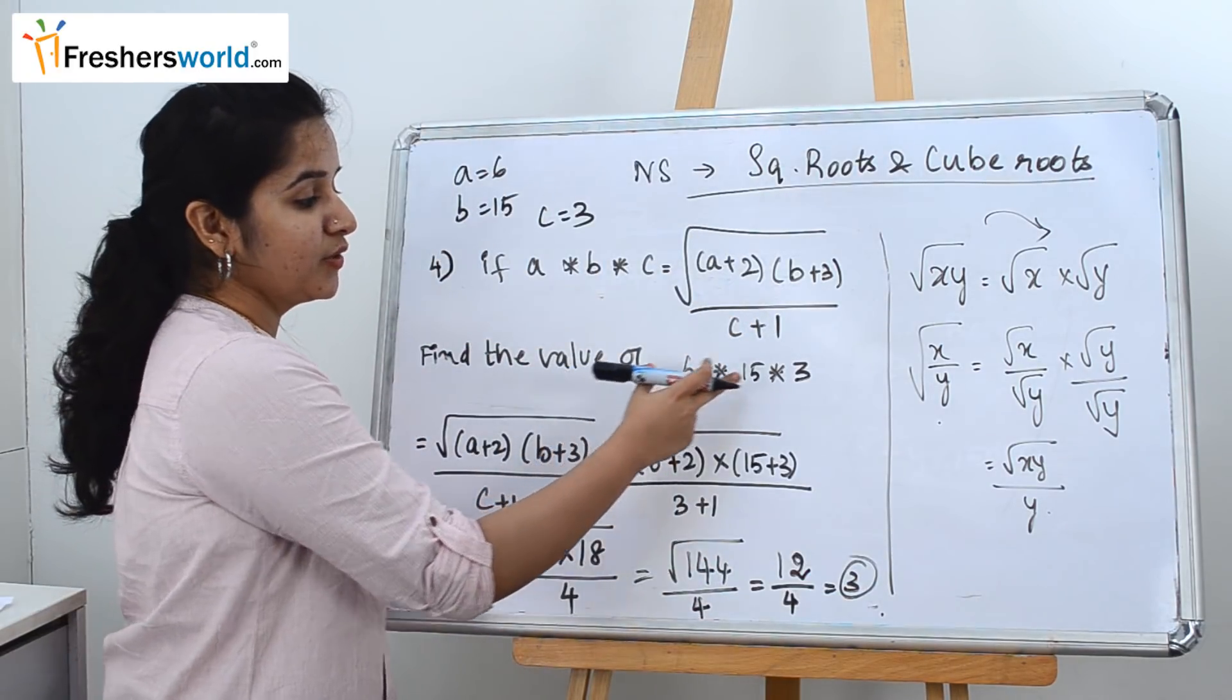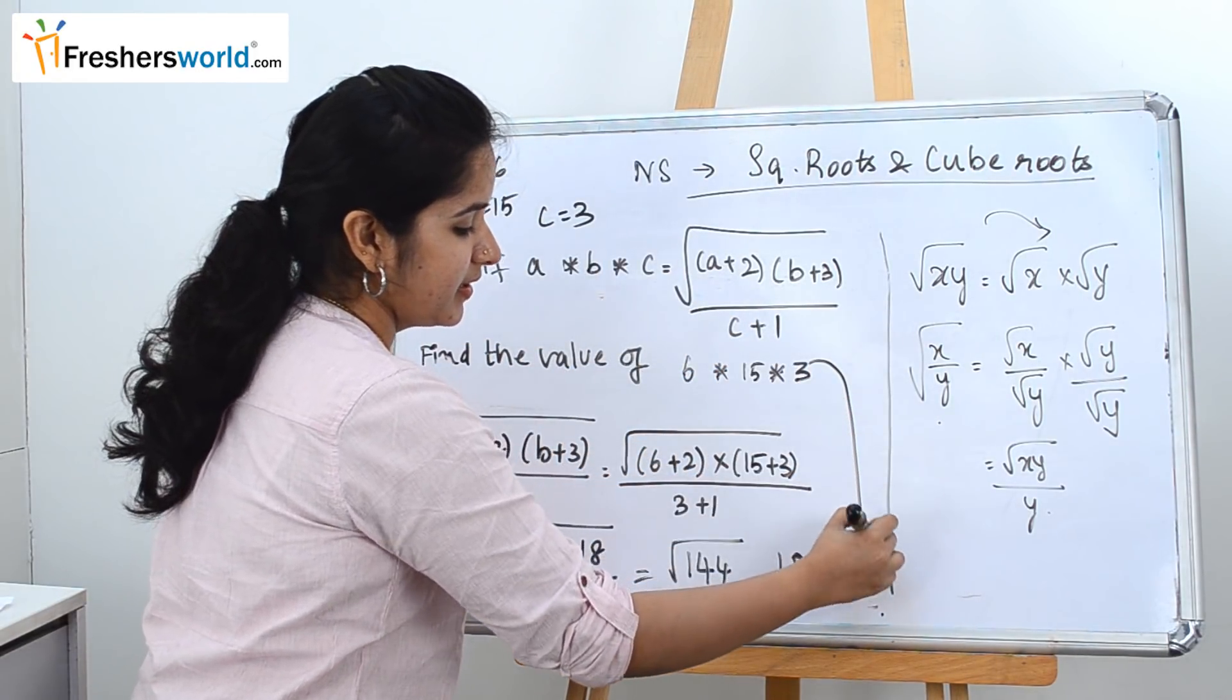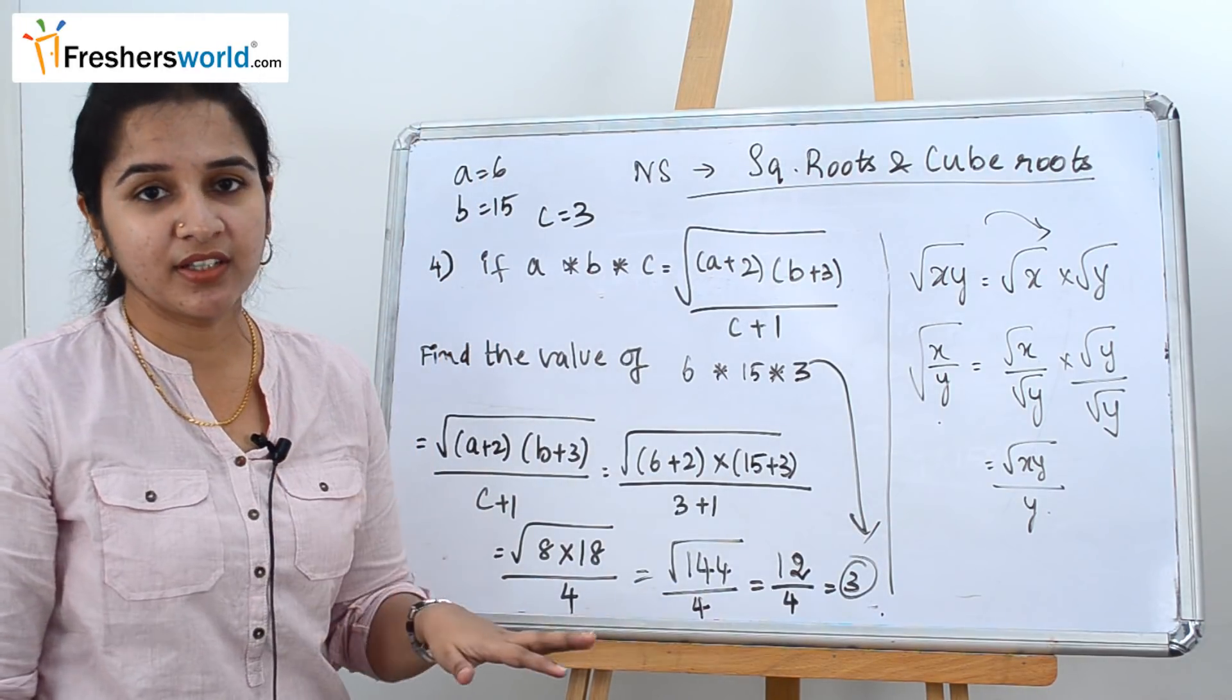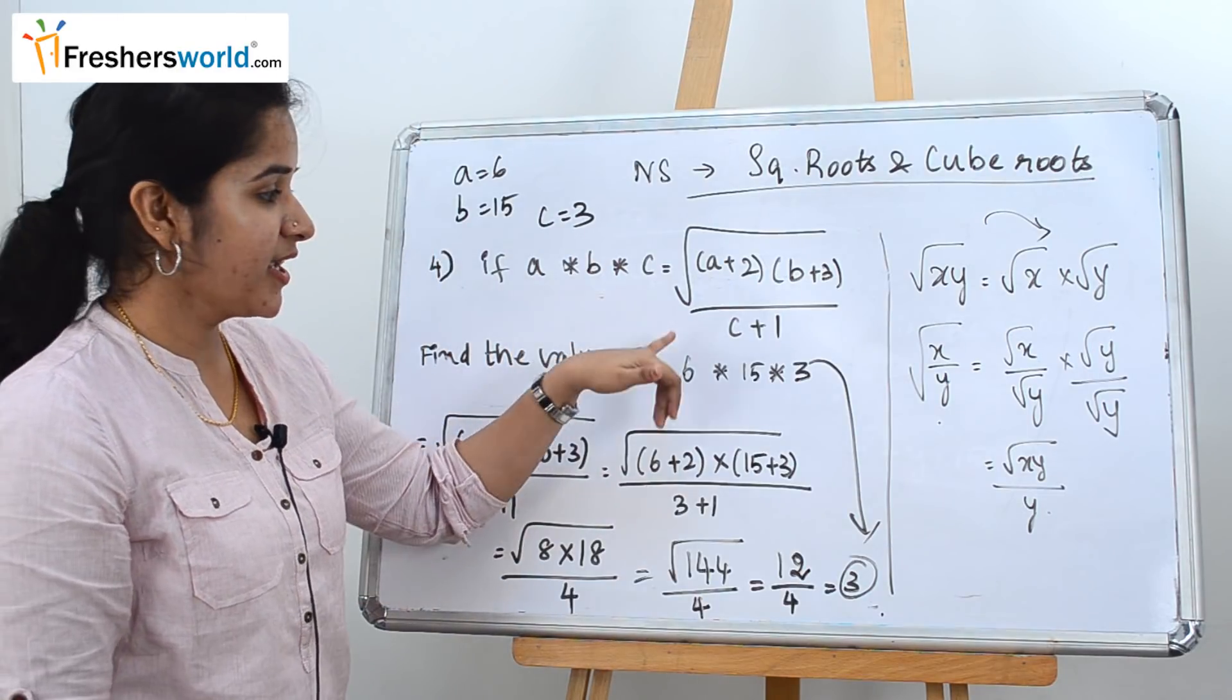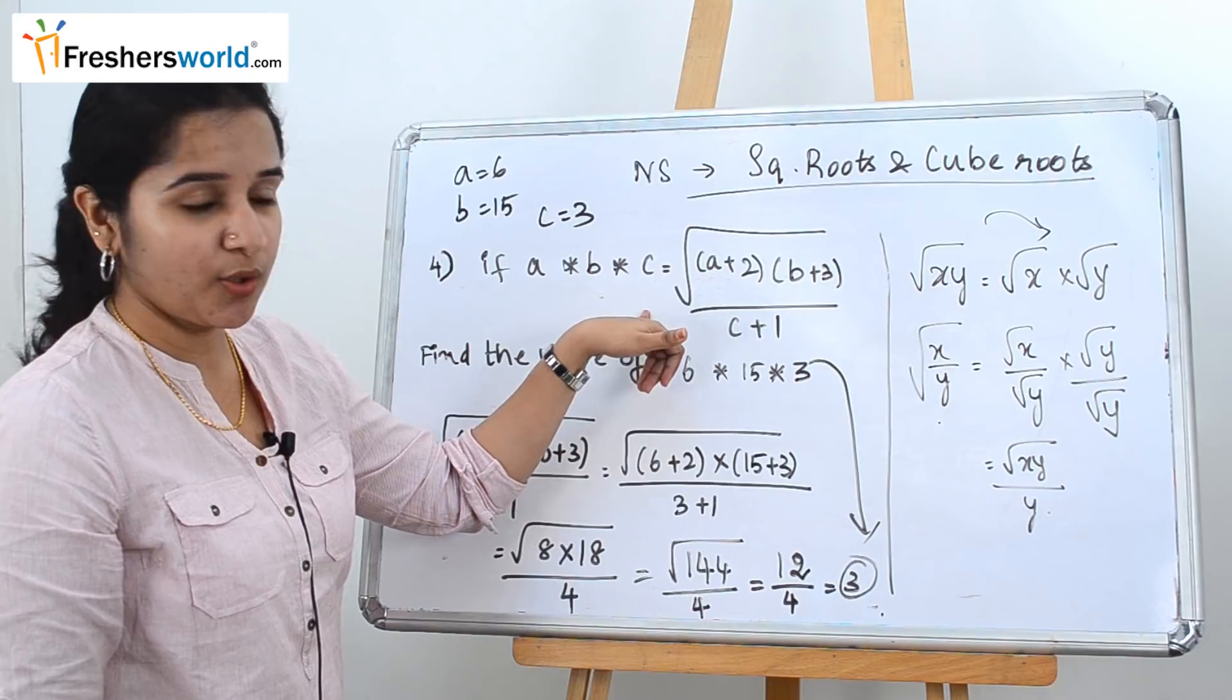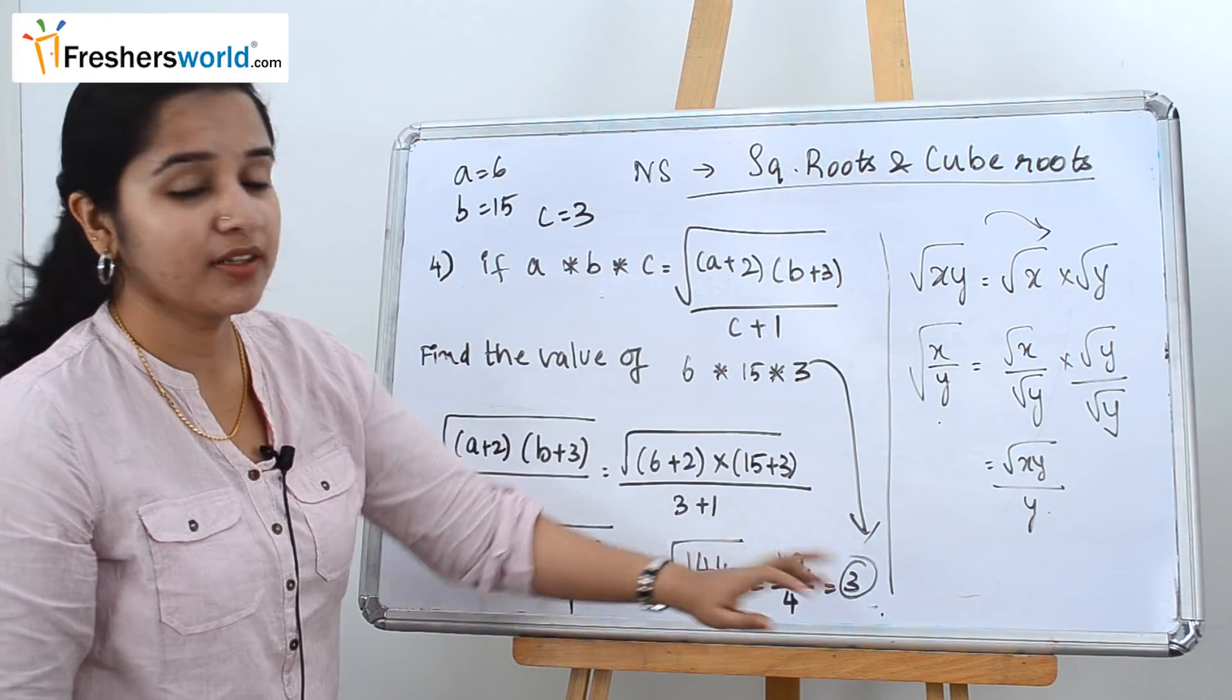So the value of 6 into 15 into 3 is nothing but 3. So how did we do this? It's very simple. They have given everything in the question. You have to find the value of a, b, and c, equate it to the question that they have given. Put it in the one that they have given already in the question. Once you solve it, you will get the final value.